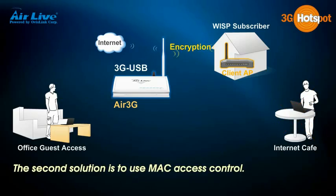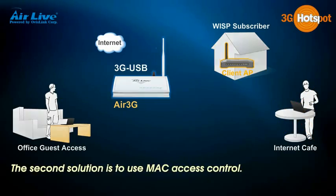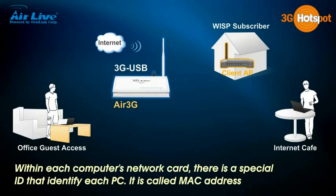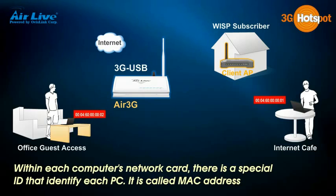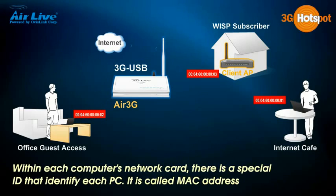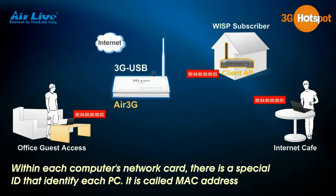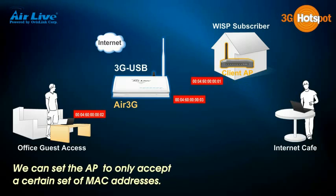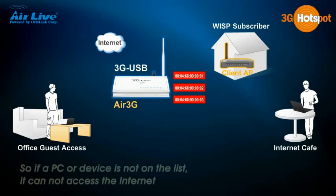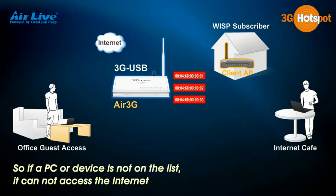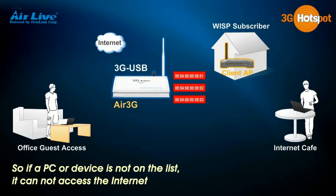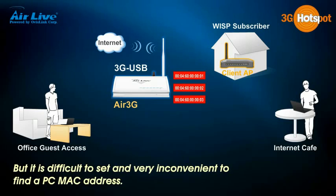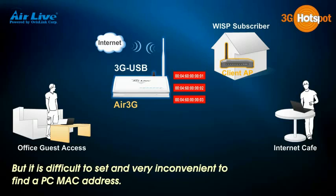The second solution is to use MAC Access Control. Within each computer's network card, there is a special ID that identifies each PC — it is called a MAC address. We can set the AP to only accept a certain set of MAC addresses, so if a PC or device is not on the list, it cannot access the internet. But it is difficult to set up and very inconvenient to find a PC's MAC address.